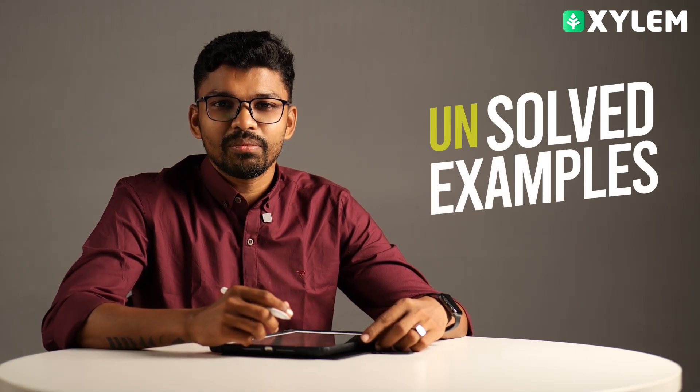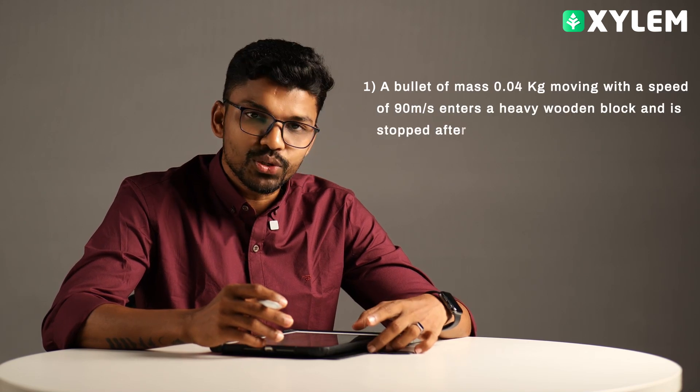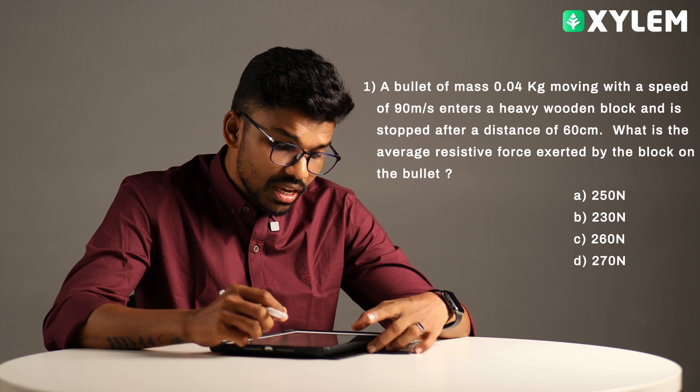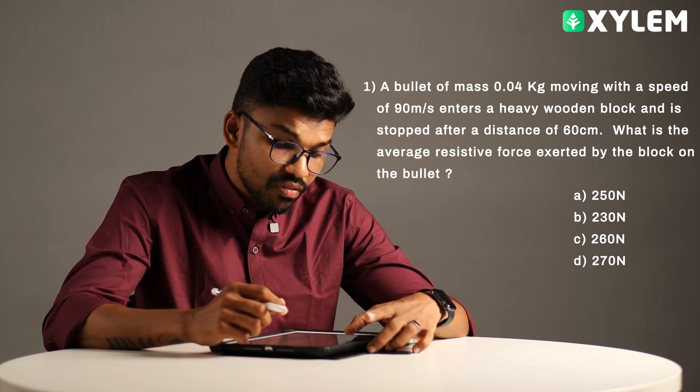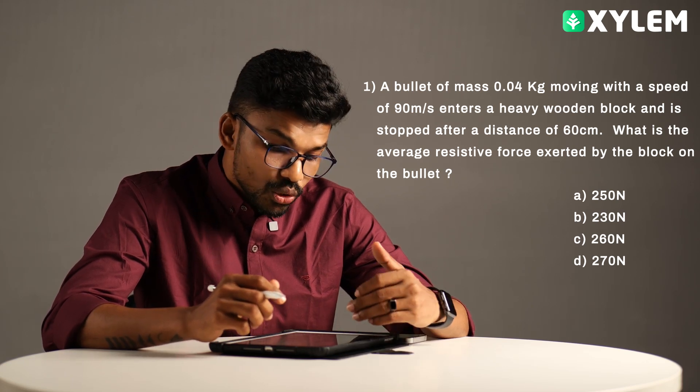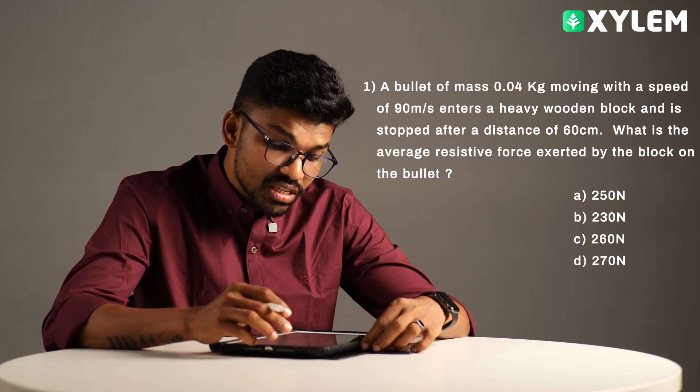Hi students, RRP from Xylem Learning. Laws of Motion NCERT Example 5.2. Question: A bullet of mass 0.04 kg moving with a speed of 90 meter per second enters a heavy wooden block and stopped after a distance 60 cm. What is the average resistive force?